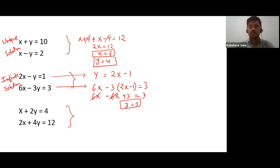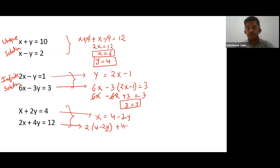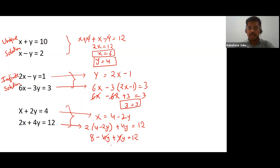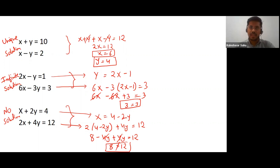For the third kind, from the equation x plus 2y equals 4, we take x equals 4 minus 2y and substitute into the second equation: 2(4 minus 2y) plus 4y equals 12. Opening the brackets: 8 minus 4y plus 4y equals 12. The y terms cancel and we get 8 equals 12, which is impossible. Therefore this set of equations has no solution.